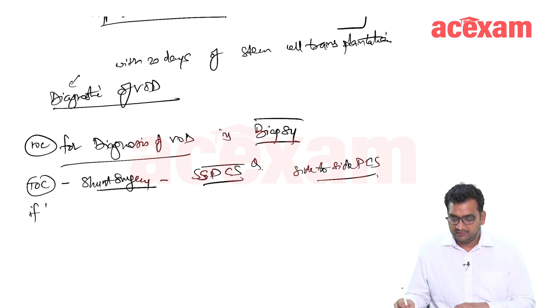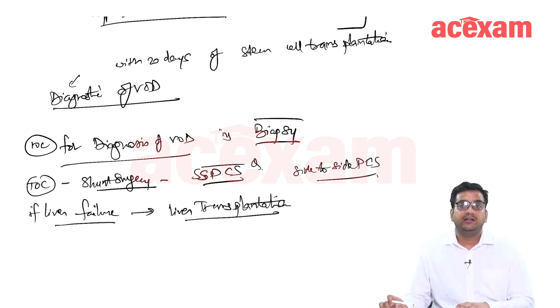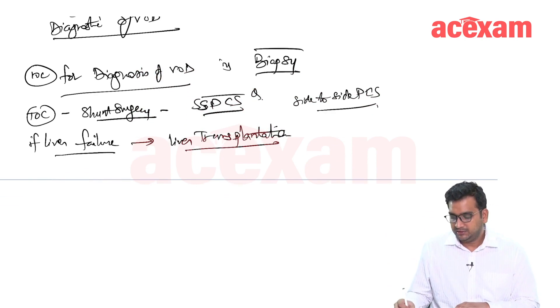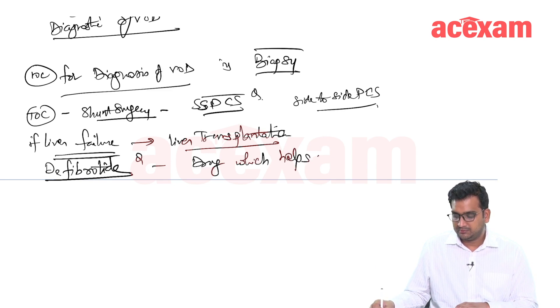If there is liver failure, then we will have to go for liver transplantation. And which drug helps in improving the survival? Defibrotide. Defibrotide is the drug which helps in improving survival in VOD.